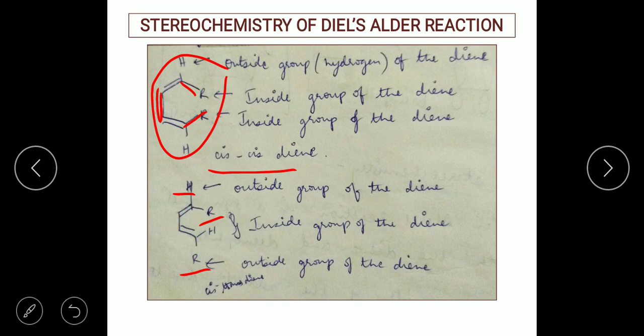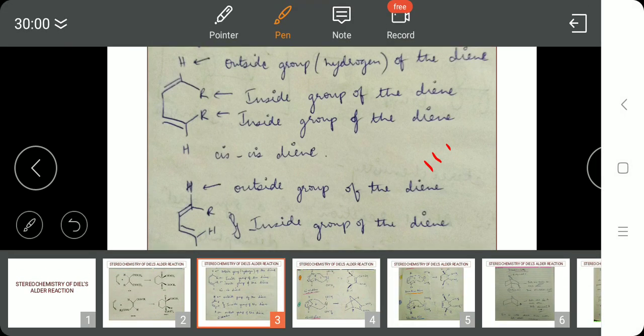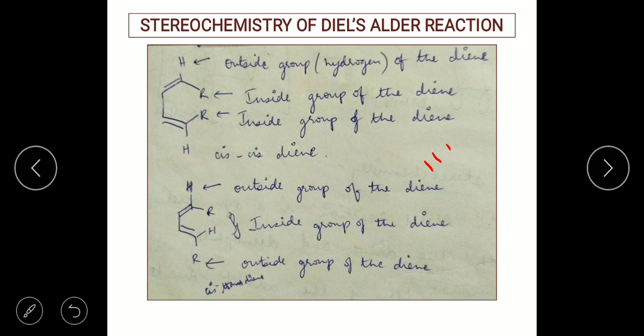One more important aspect to remember is that all outside groups are always below the plane and inside groups are always above the plane. So whenever such examples are given, the outside groups will be written in dashed lines and the inside groups will be represented in wedge form.